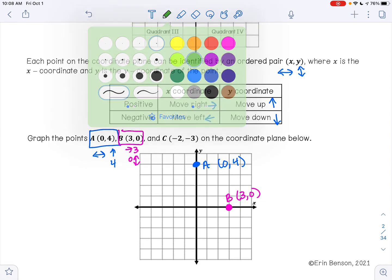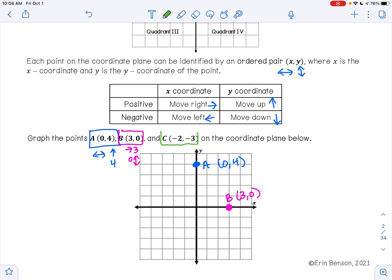And then lastly, we have the point C, which is (-2, -3). Because it's negative, that's telling you to go to the left 2. And because it's negative, it's telling you to go down 3. So you're going to start at your origin, and you're going to go left 2, and then down 1, 2, 3. So this is your point C, and that is the point (-2, -3).